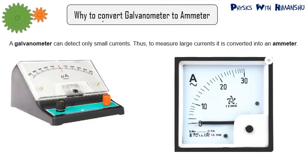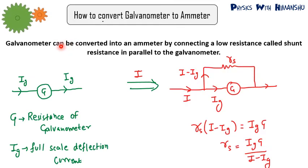Now how to do it? Galvanometer can be converted into an ammeter by connecting a low resistance, please remember low resistance, called as shunt resistance in parallel to the galvanometer. Let's see how.